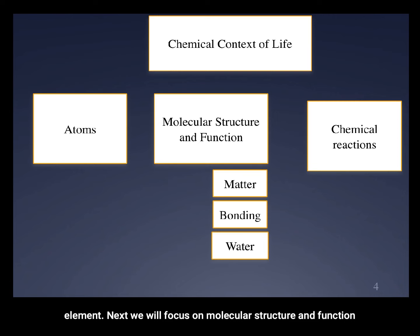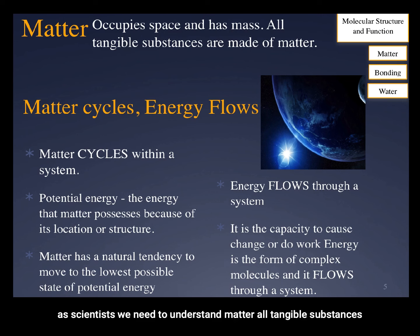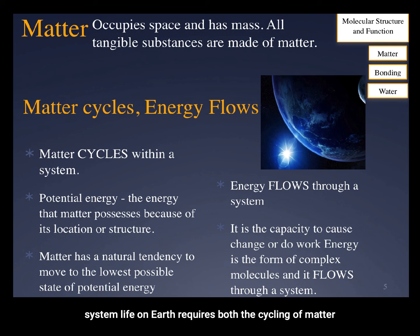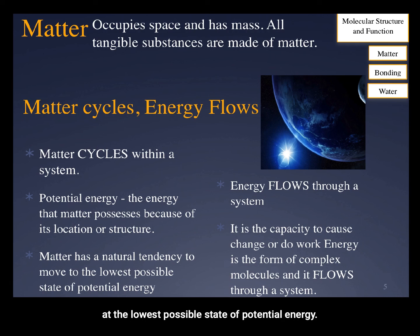We will focus on molecular structure and function and what role that plays in biology. To understand molecular structure and function, we will begin with a brief review of matter. As scientists, we need to understand matter. All tangible substances are made of matter. Matter occupies space and has mass — you can weigh it and measure it. Matter cycles within a system, and matter is different than energy, which flows through a system. Life on Earth requires both the cycling of matter and the flow of energy. Matter has potential energy, energy that exists because of its location or its structure, which is made up of chemical bonds. Matter has a tendency to remain at the lowest possible state of potential energy.